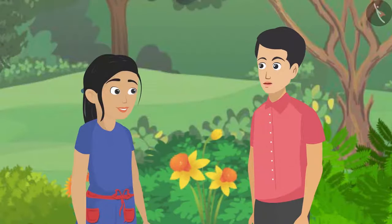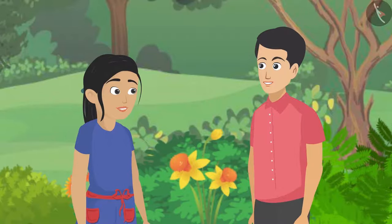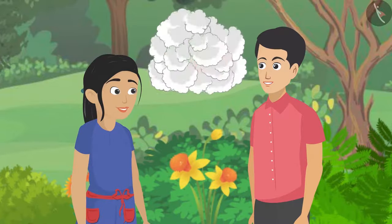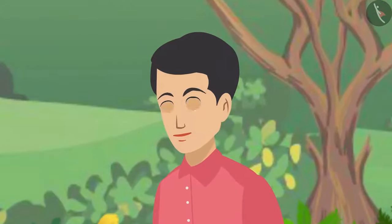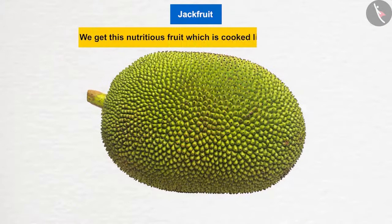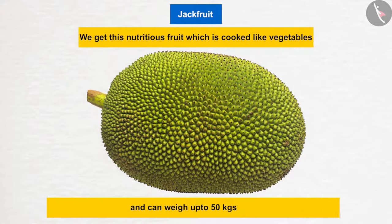Father challenged the kids: on which plant does the largest fruit in the world grow? Pushpa guessed watermelon since they were talking about vines. The answer is jackfruit — the largest of all fruits, which hangs on the jack tree. Father revealed that jackfruit can weigh up to 50 kg.